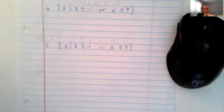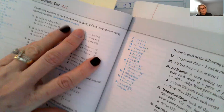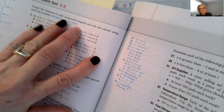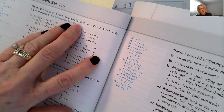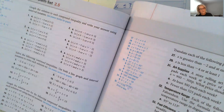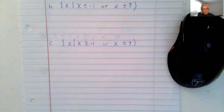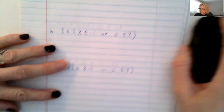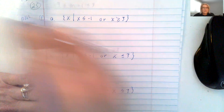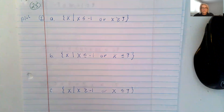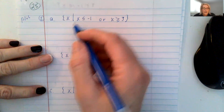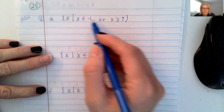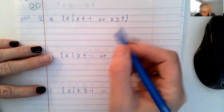The first question, number two, is asking us to graph the solution set to each compound inequality on a number line, and then write the answer using interval notation. So the first one says we want to graph x where x is less than or equal to negative one, or x is greater than or equal to three.